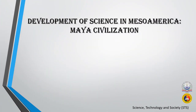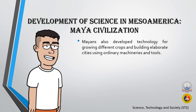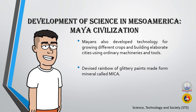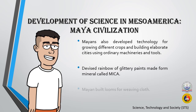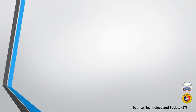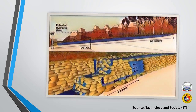Development of Science in Mesoamerica: Mayans also developed technology for growing different crops and building elaborate cities using ordinary machinery and tools. They devised a range of glittering paints made from a mineral called mica, and Mayans built looms for weaving cloth.